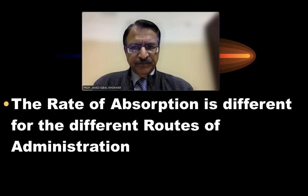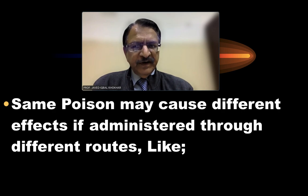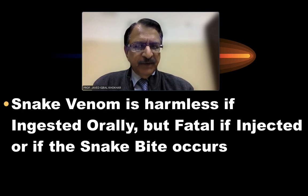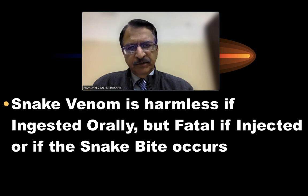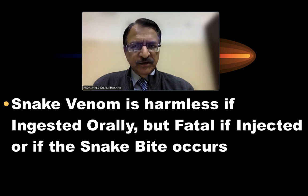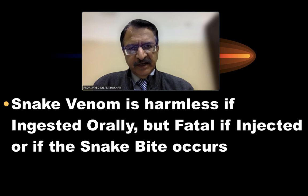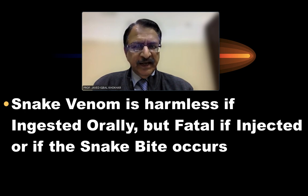The route of administration is the second most important factor. The rate of absorption differs for different routes, and the same poison may cause different effects if administered through different routes. For example, snake venom is harmless if ingested orally — the stomach acid and enzymes digest the protein-based enzymes — but it is fatal if injected by bite or syringe.